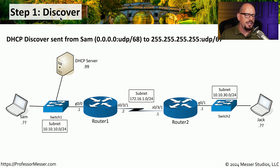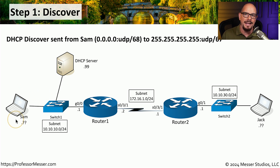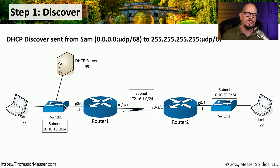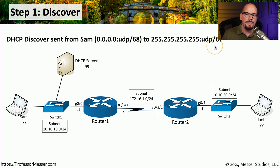Let's focus on the Discover step. Sam's workstation is going to send a DHCP discover packet. It's going to be sent from an IP address of 0.0.0.0, because Sam's workstation currently does not have an IP address. This packet is going to be sent as an IP broadcast to 255.255.255.255, so that every device on the subnet will see this DHCP request. This request is sent using UDP port 68 on Sam's workstation, and the broadcast is sent to UDP port 67.